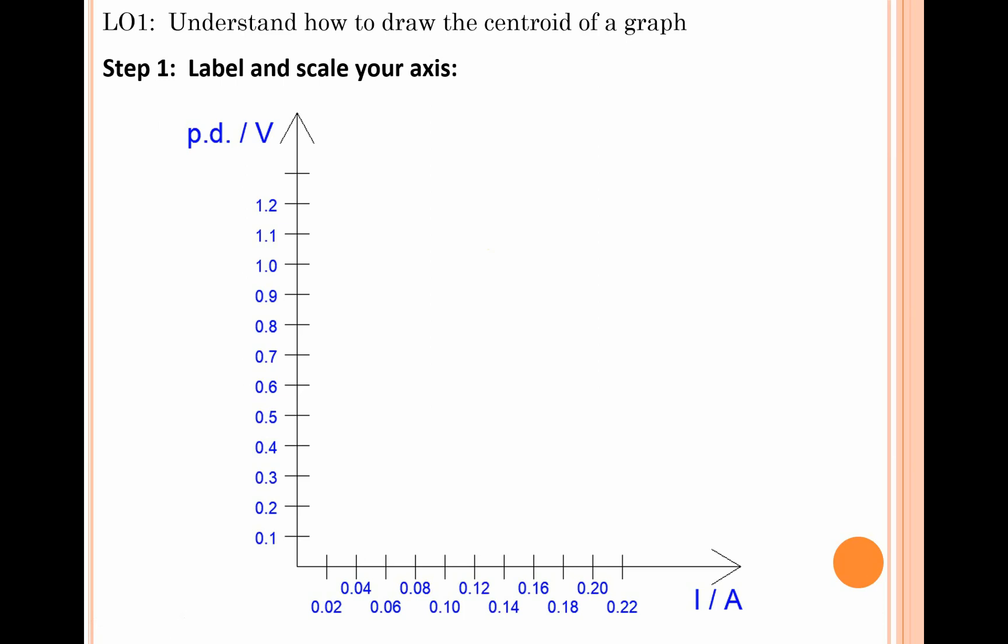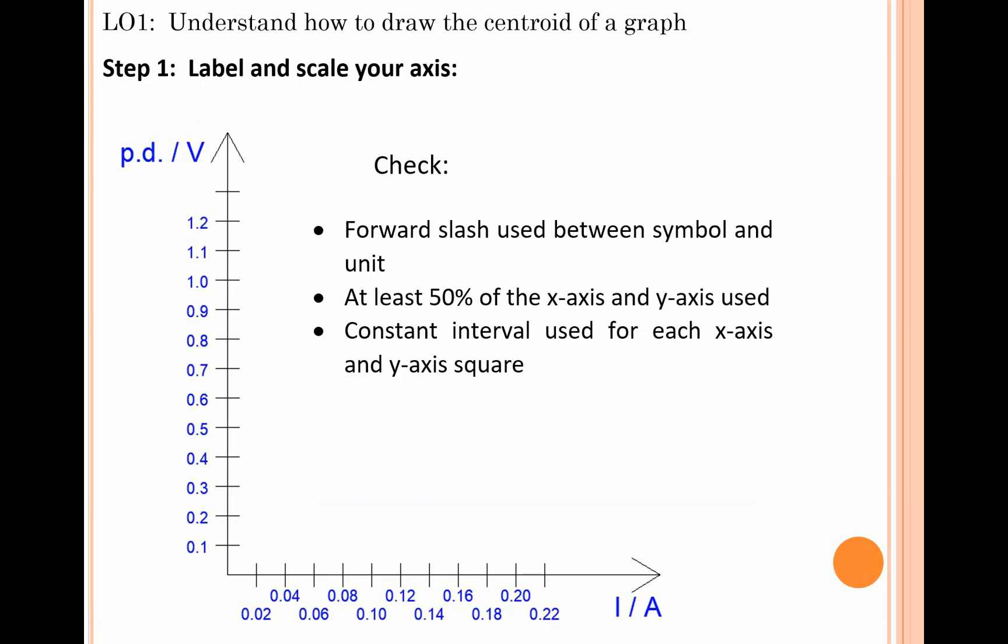Step one: label and scale your axes, both the x-axis and the y-axis correctly. This question did say potential difference on the y-axis and current on the x-axis. Be careful if you're instructed by the examiner to put a certain quantity in this case - PD on the y-axis and current on the x-axis. Each year, 10 to 15 percent of students will invert the two axes and lose big marks for that. When labeling the axes, put in your quantity (PD and current I) and then use that forward slash and put in the units (V for voltage and capital A for amperes).